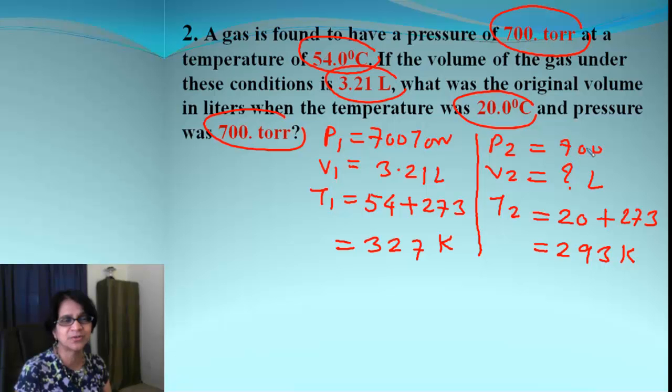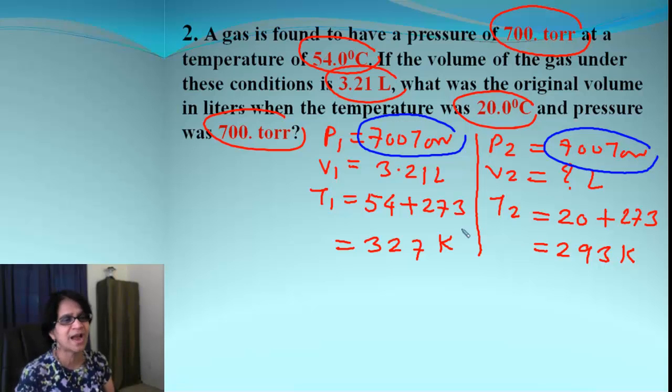And look at the pressure. The pressure is 700 torr. So, although pressure is given twice, if you look carefully, it is the same value. So, we don't really need to have that pressure.